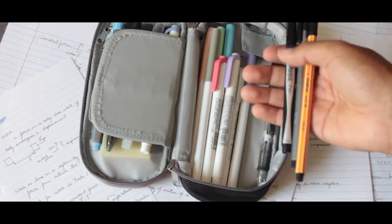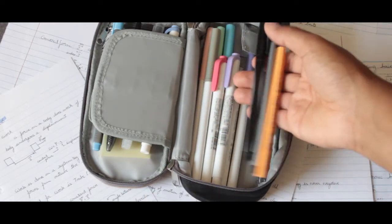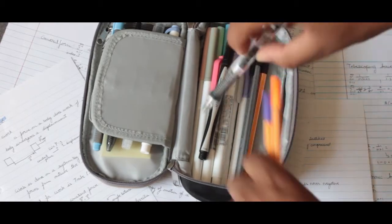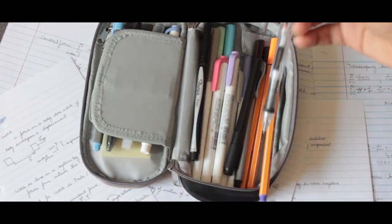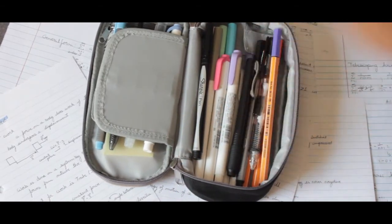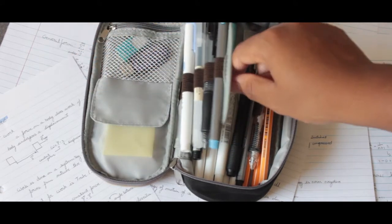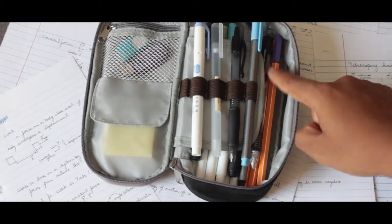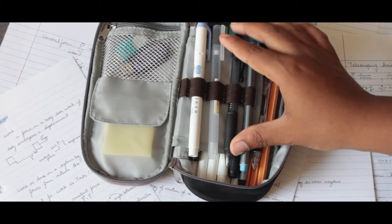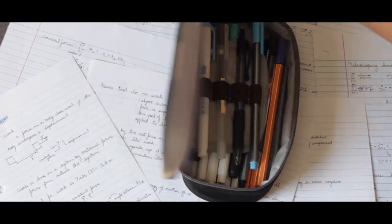Then I just have a regular Paper Mate mechanical pencil, because why not? I am thinking about getting the center of gravity pencil though - I think it's by InnoGel, I believe it's by InnoGel. Yeah, so this is basically all that's in my pen case.